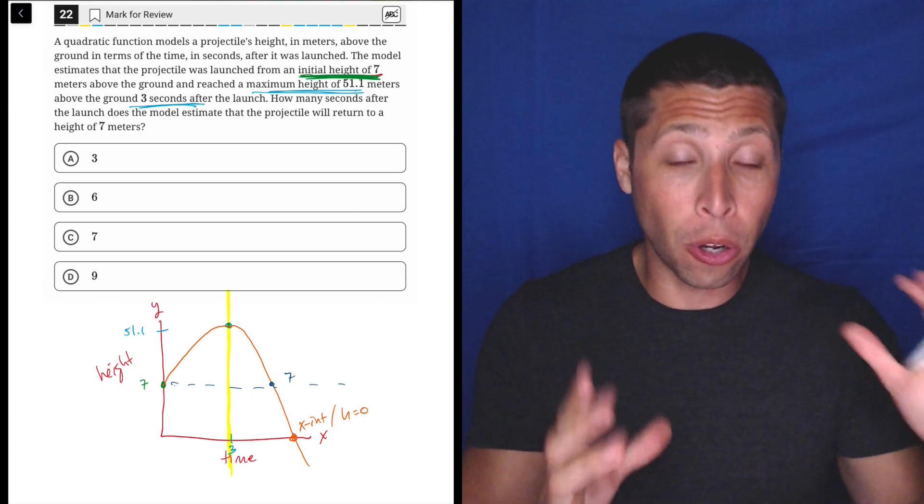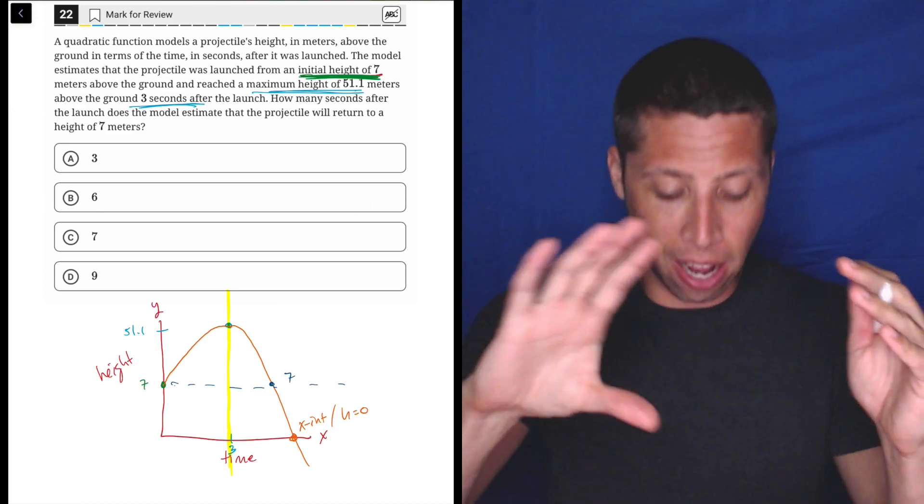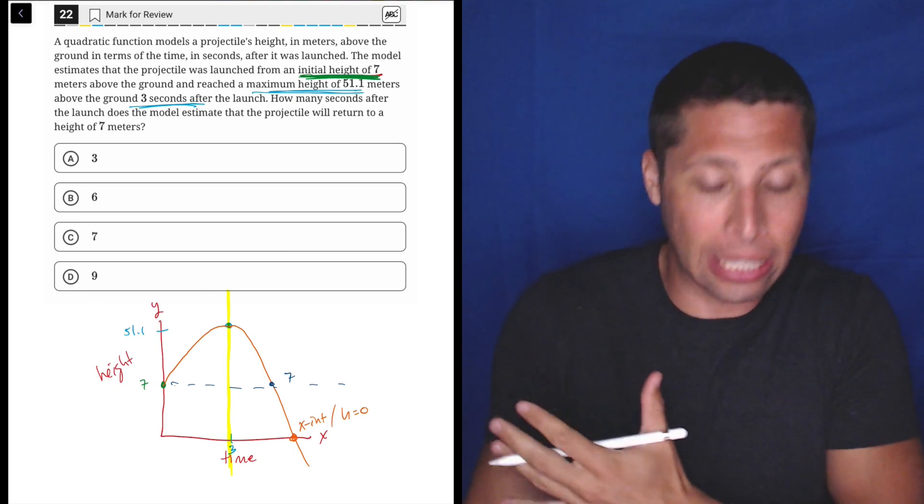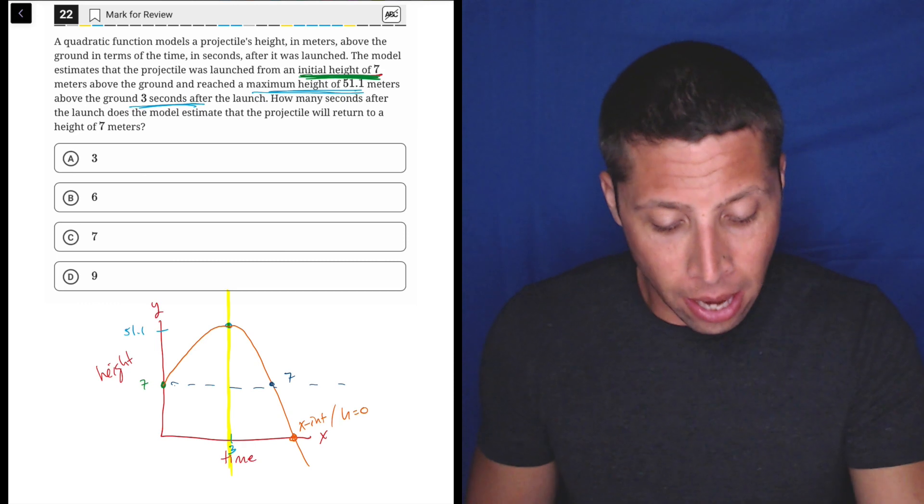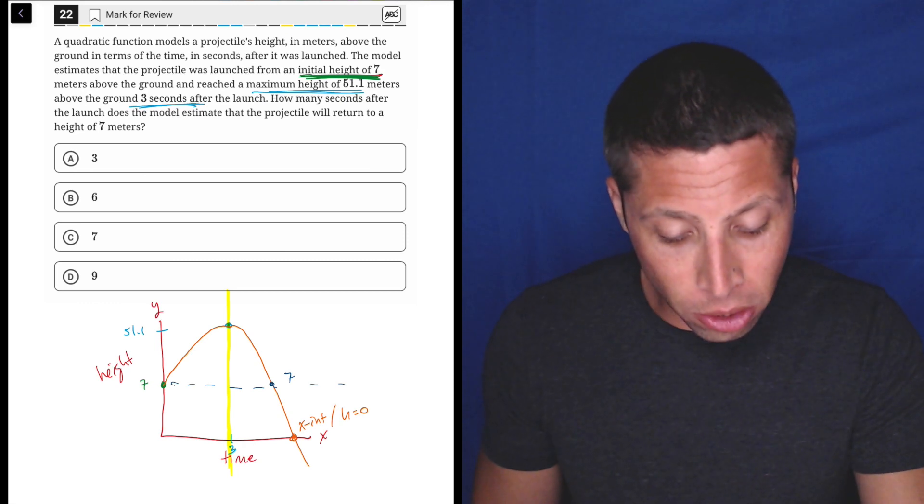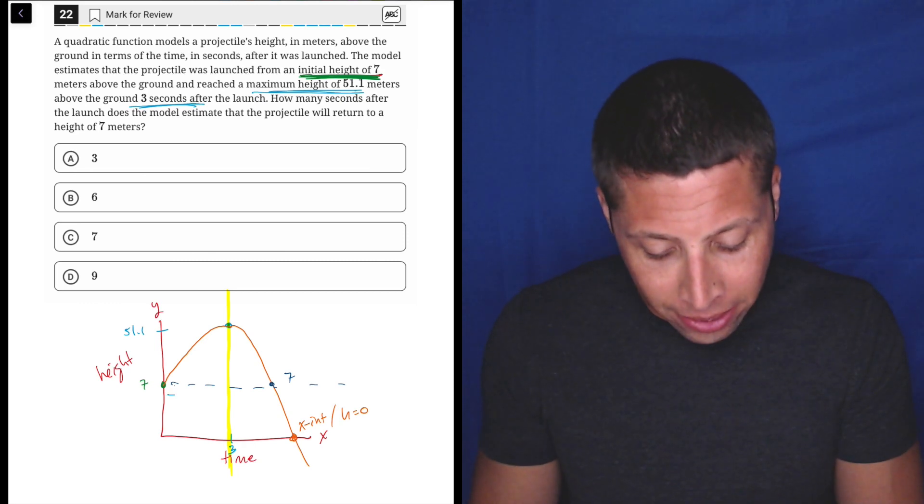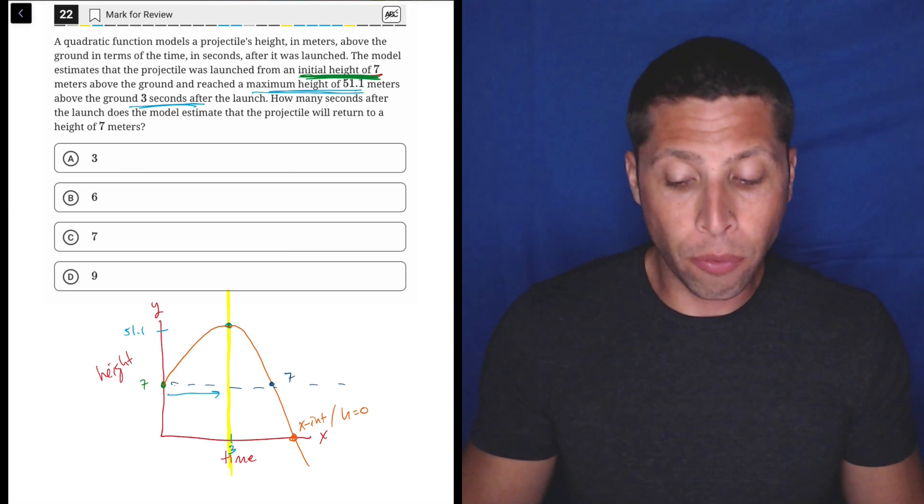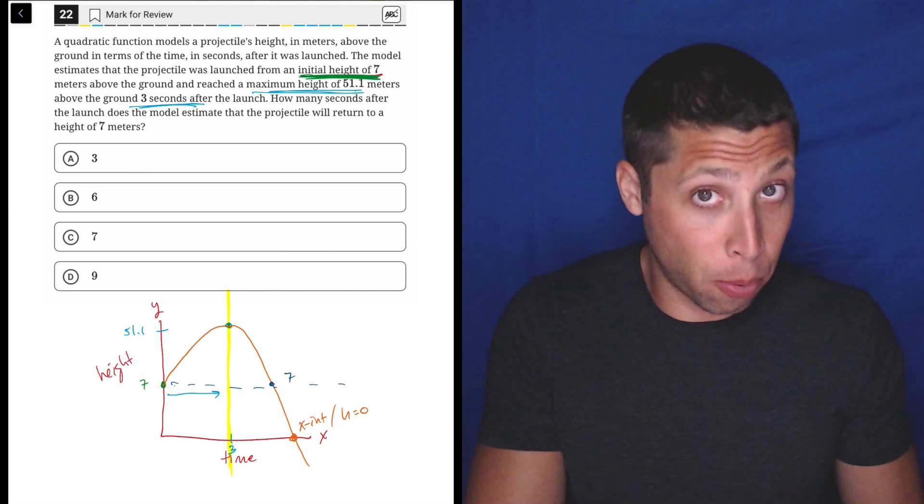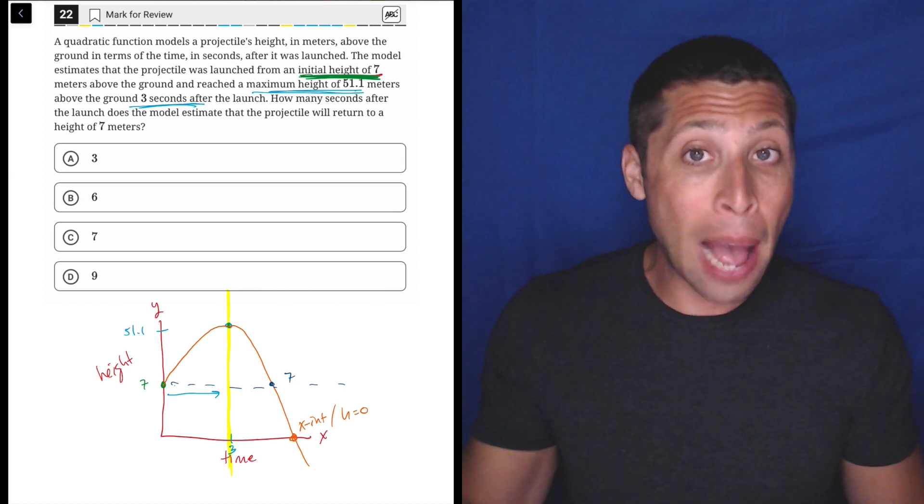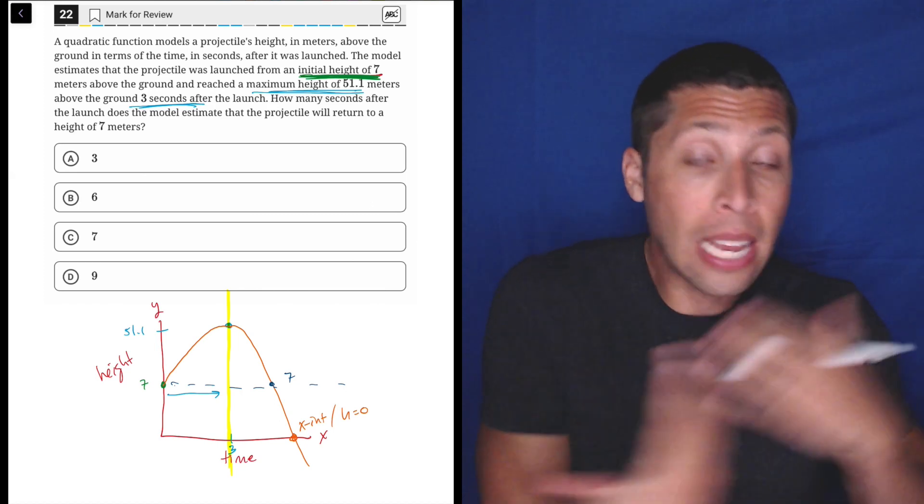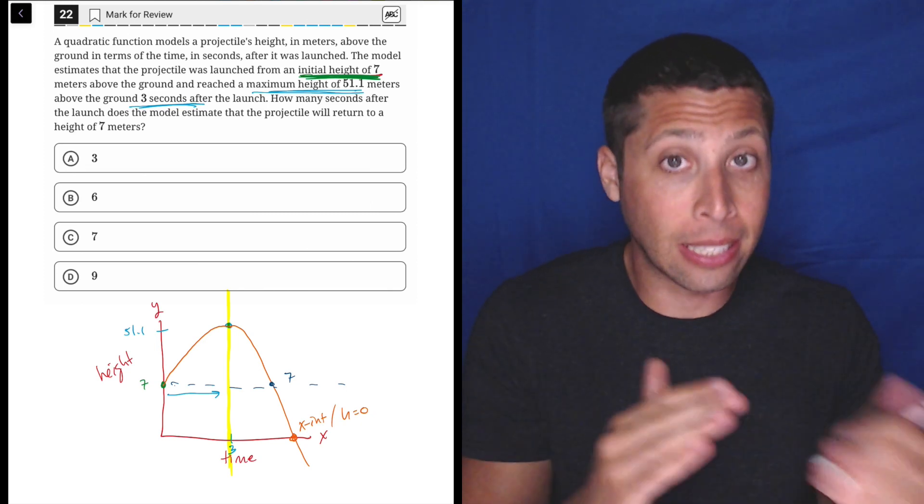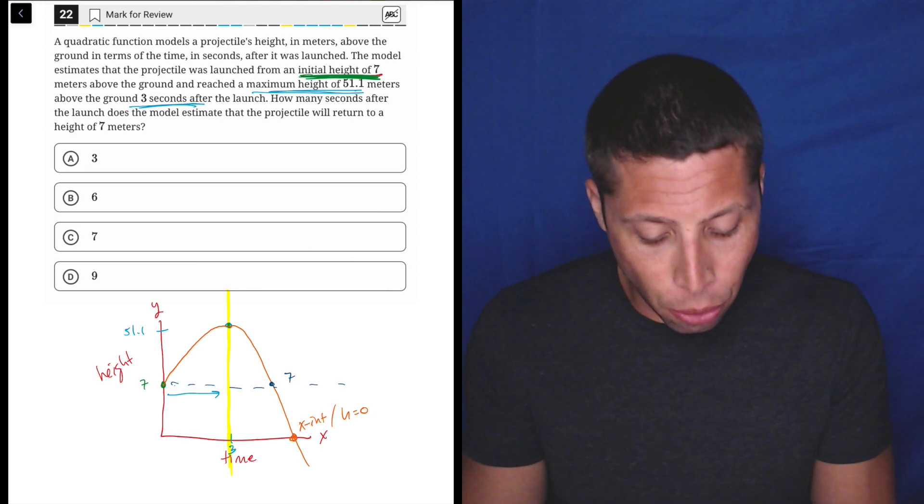And I get why that's kind of confusing, right, because like I said, we're in the first quadrant only, so we don't have this kind of other end where it goes below seven because the graph doesn't go there. But in theory it still does. But I don't care about that. I want to know what's going on when we go from seven to three, or let me say it again, when we go from the starting point to the high point, the maximum, because whatever happens in that time, the same amount of time is gonna pass and I'm gonna get back to seven.